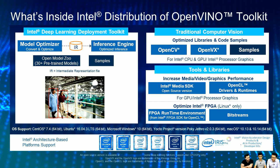OpenVINO also includes a Media SDK for video resizing and transcoding, leveraging Intel hardware to optimize performance. There's OpenCL support for heterogeneous solution development as well. For FPGA, Intel enables it as an acceleration card, and there are FPGA-related tools inside OpenVINO such as a runtime environment and bitstream support, so you can expect significant performance gains using FPGA as an acceleration card.